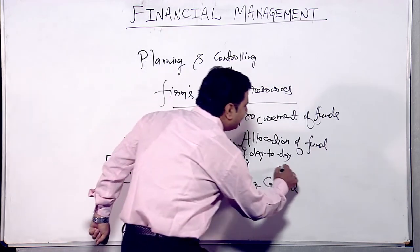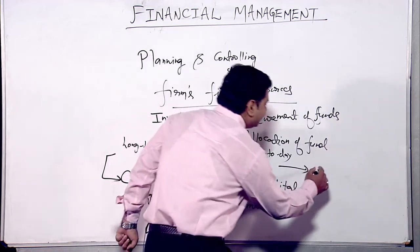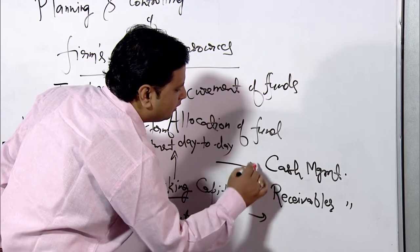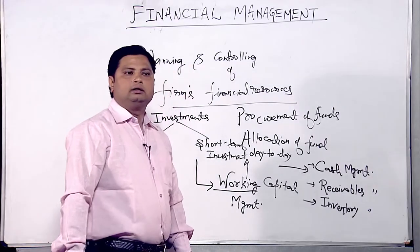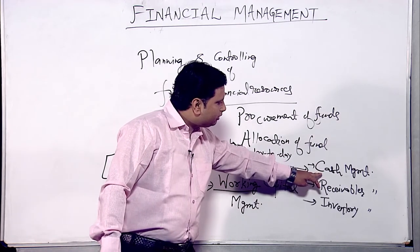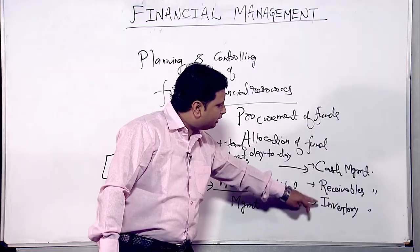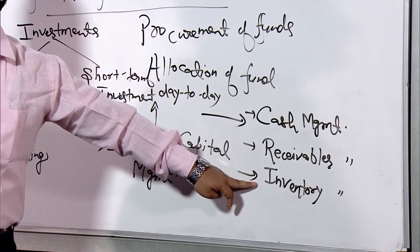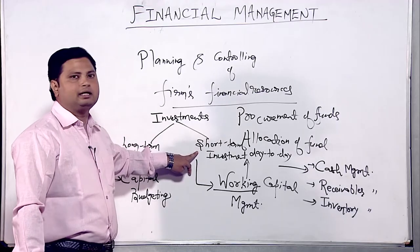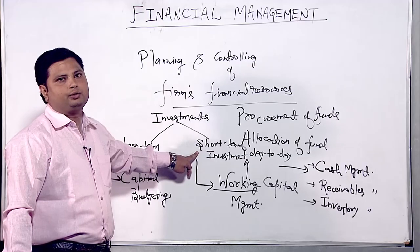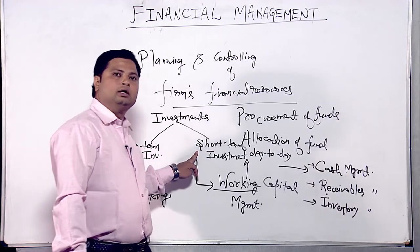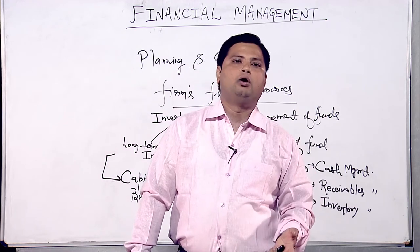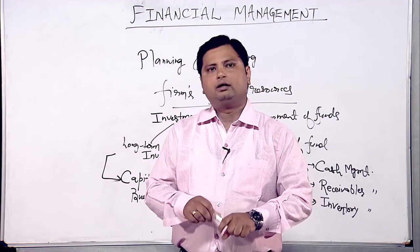Under working capital management, three types of management are done by a finance manager: cash management, receivables management, and inventory management. Cash, receivables, and inventory are all current assets, and current assets in simple words represent short-term investment decisions. So investment decisions cover decisions taken by a finance manager regarding investment in both short-term current assets and long-term fixed assets.